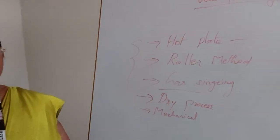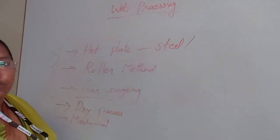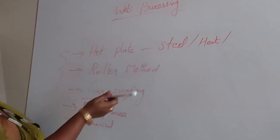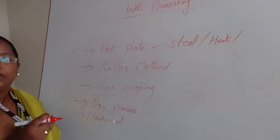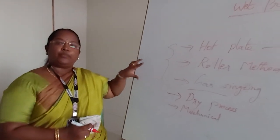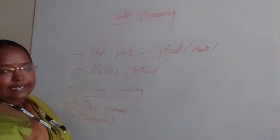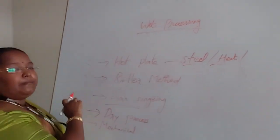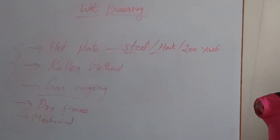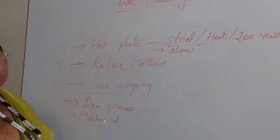The hot plate method uses a material made of steel. We burn the protruding fibers by generating heat in the steel, and the fabric passes over the steel material so that only the protruding fibers are burned without damaging the entire fabric. We can process 200 yards of fabric per minute. However, the drawback is that it is a very slow process.